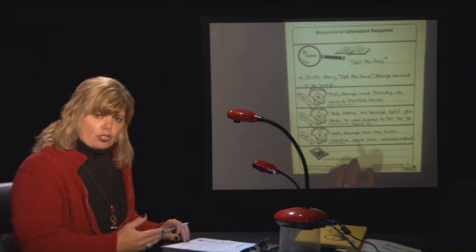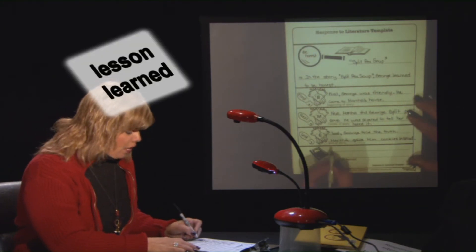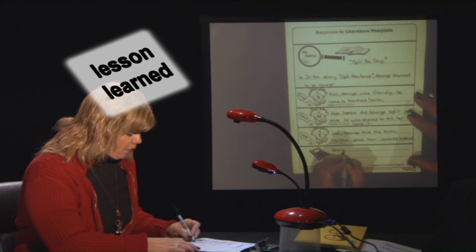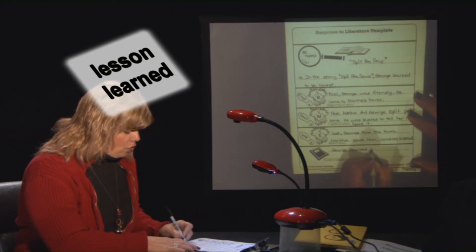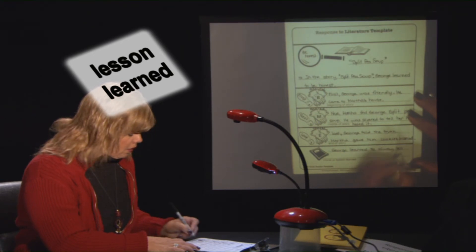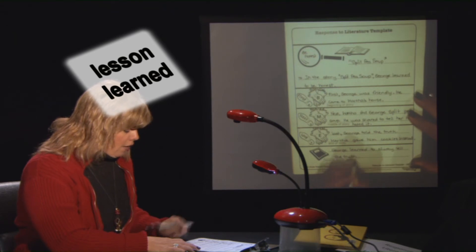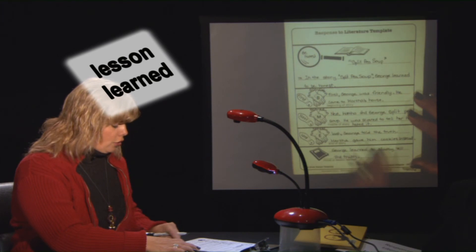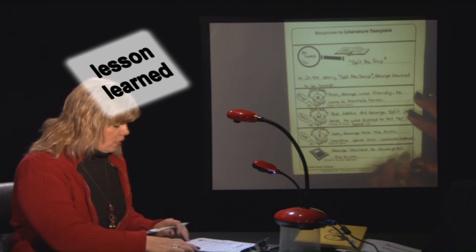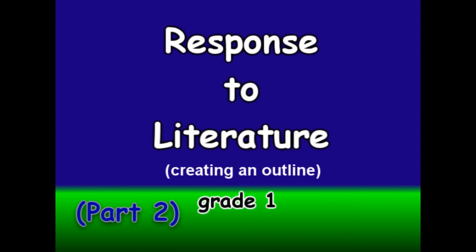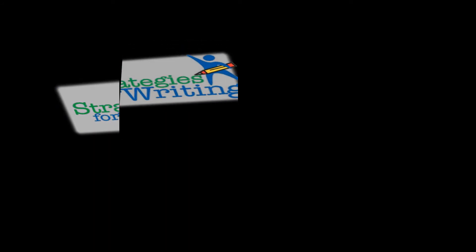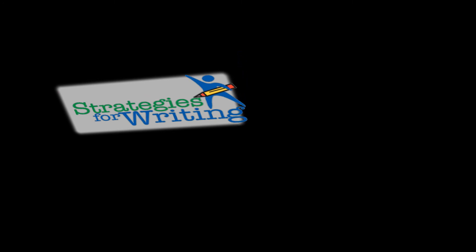Now we're going to go to the end. What is the lesson that George learned? George learned to always tell the truth. So we write: George learned to always tell the truth. Then we check for our period and our strong capital, and we read it one more time: George learned to always tell the truth.